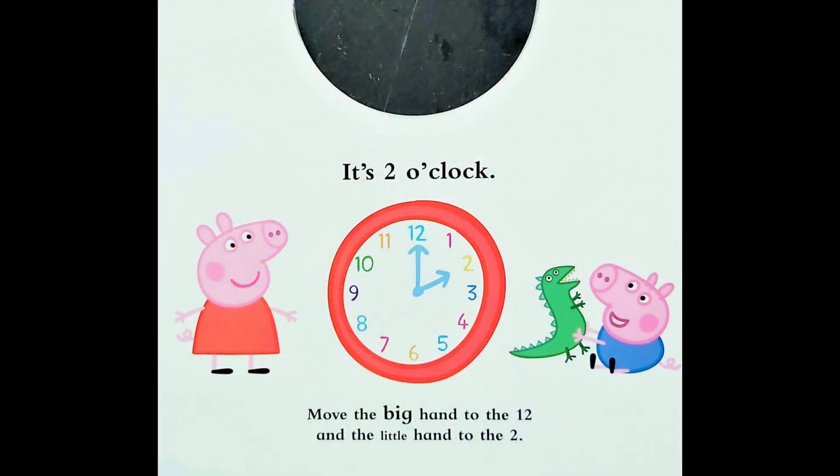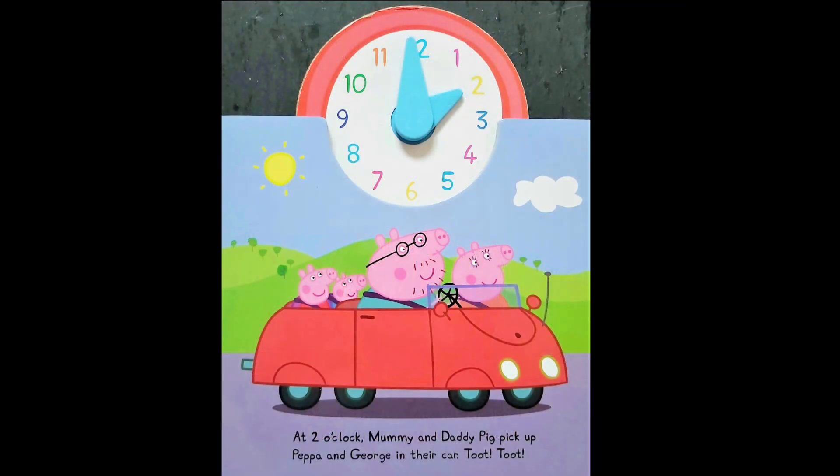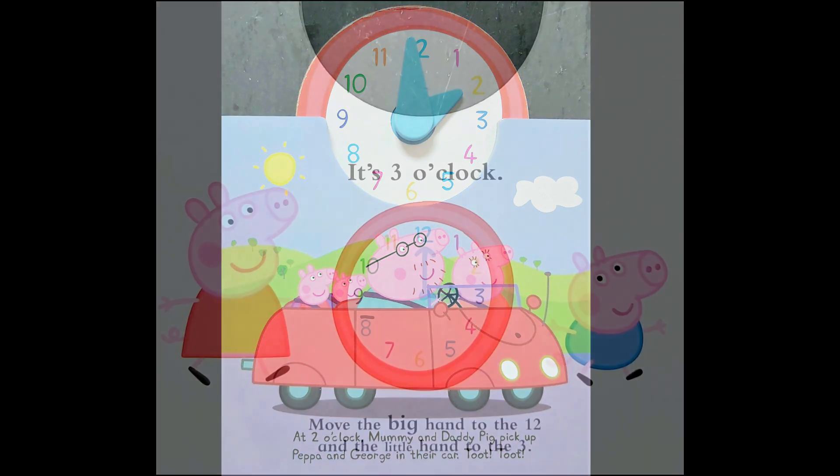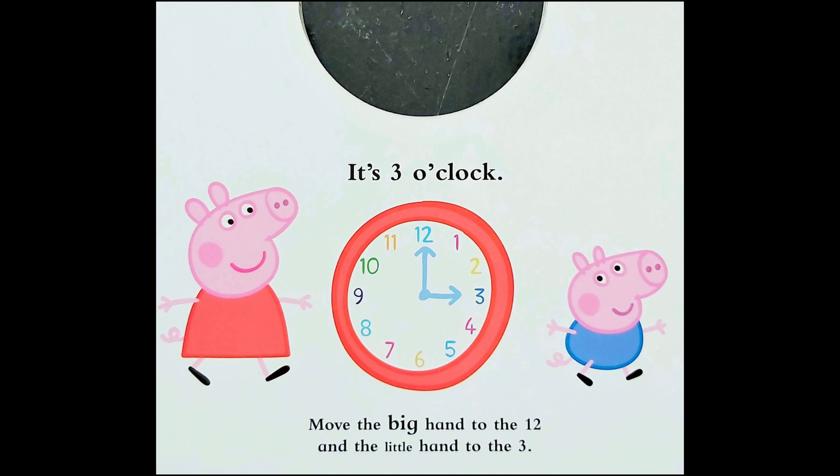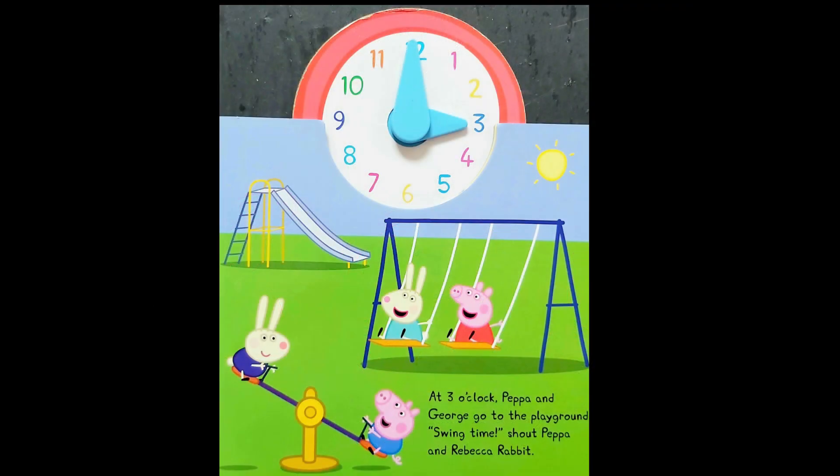It is two o'clock. Move the big hand to the twelve and the little hand to the two. At three o'clock, Peppa and George go to the playground. Swing time, shouts Peppa and Rebecca.